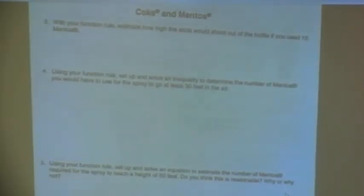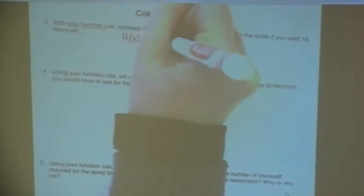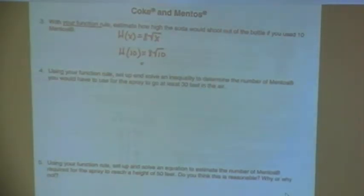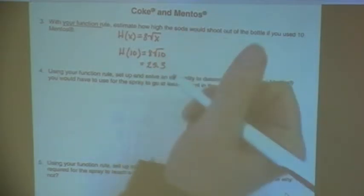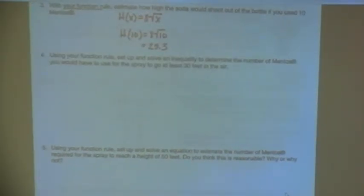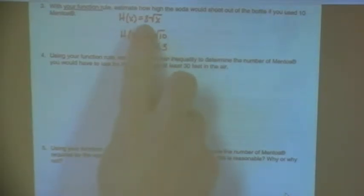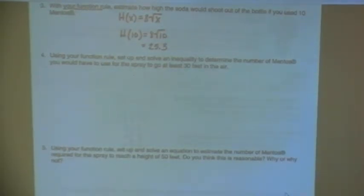Everybody good? So far so good? Okay, now ten. H of ten with my function rule. So my function rule is h of x equals eight square root of x. They want me to find it for ten. Now they want me to solve an inequality to determine the number of Mentos that you would have to use for the spray to go at least thirty feet in the air. So take a second, you set up your inequality. See if you can get this one set up correctly.